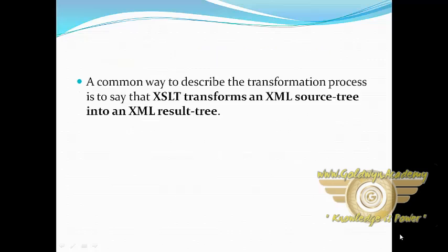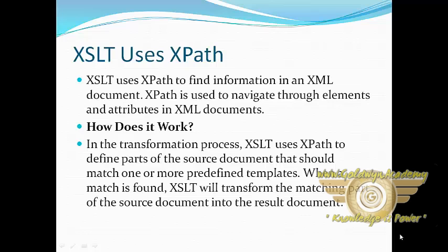A common way to describe the transformation process is to say that XSLT transforms an XML source tree into an XML result tree. XSLT uses XPath to find information in an XML document. XPath is used to navigate through elements and attributes in XML documents. In the transformation process, XSLT uses XPath to define the parts of the source document that should match one or more predefined templates.